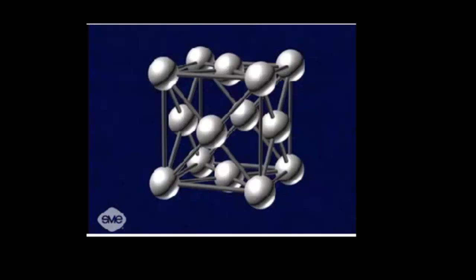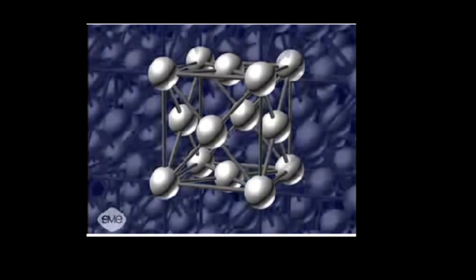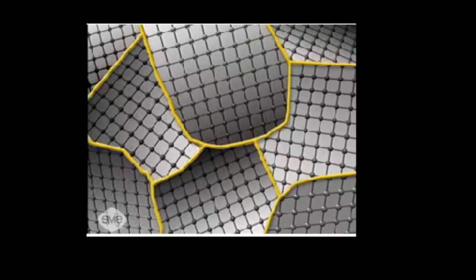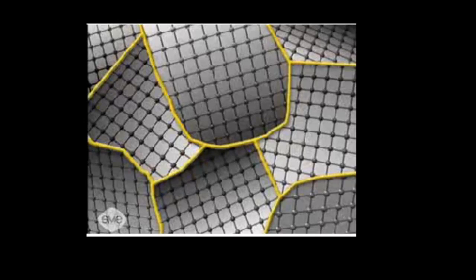When a molten metal solidifies, the atoms arrange themselves into definite patterns called crystal structures. These crystal structures grow uniformly in all directions within each developing crystal. As the metal cools, these crystals are confined by the adjacent developing crystals forming grains. The line of intersection between grains is called a grain boundary. Because the grains form independently, their crystal structures develop tilted in various directions.